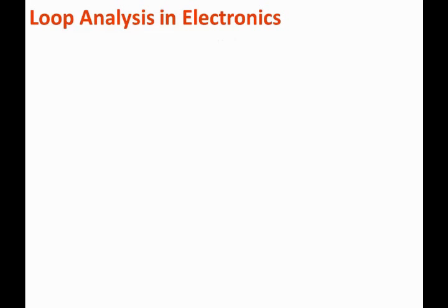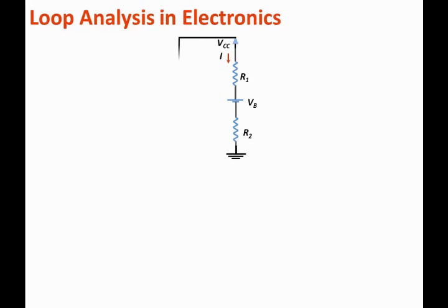Let us show you a simple electronic circuit. This circuit has one loop. Let me extend the arrow of the power supply to its voltage source, and I'm going to connect the ground of the voltage source to the ground of the circuit. The circuit clearly contains one loop, and the current through this loop is I. The way we apply loop analysis in circuits is a little bit different than the way we apply it in electronics.